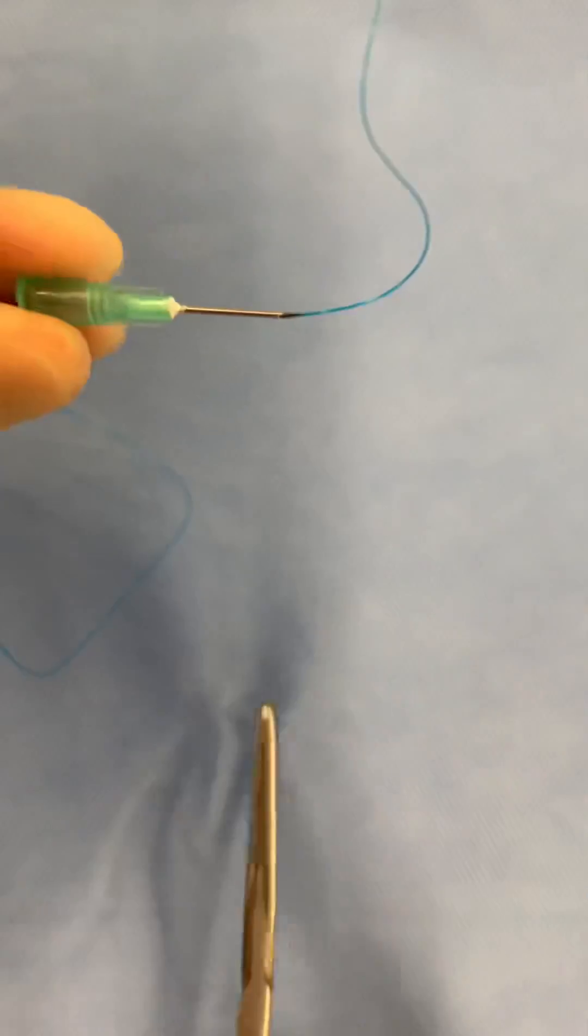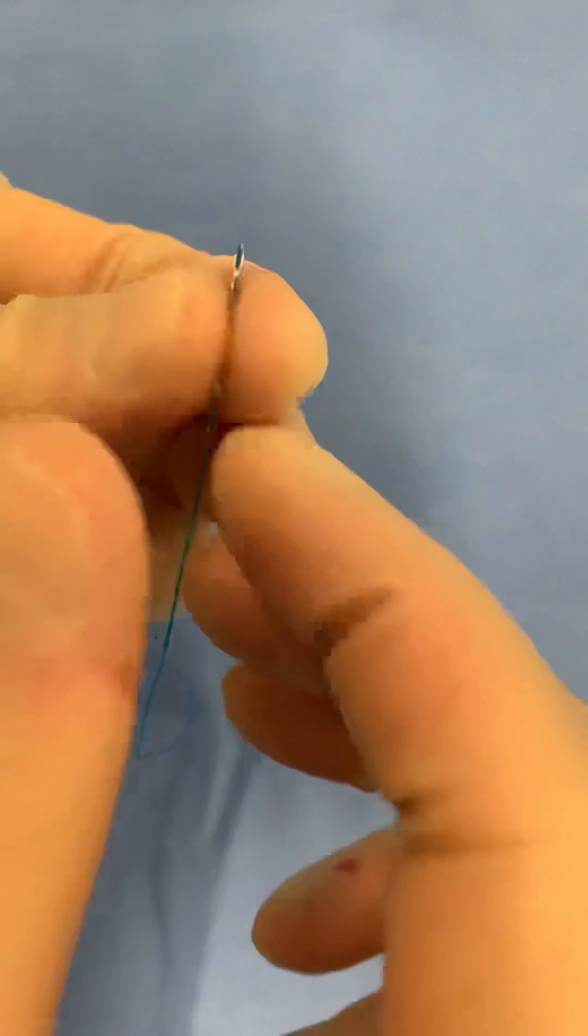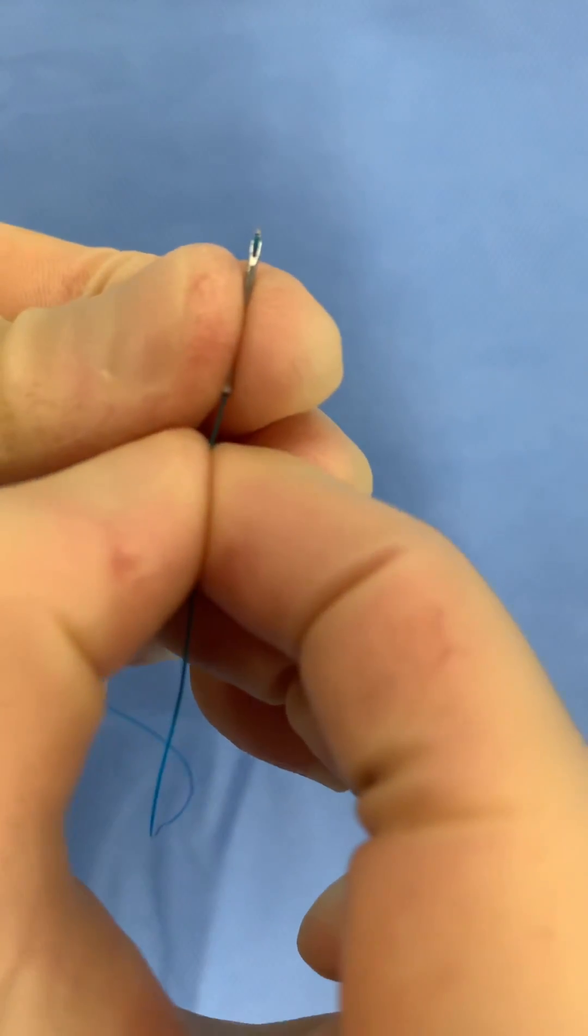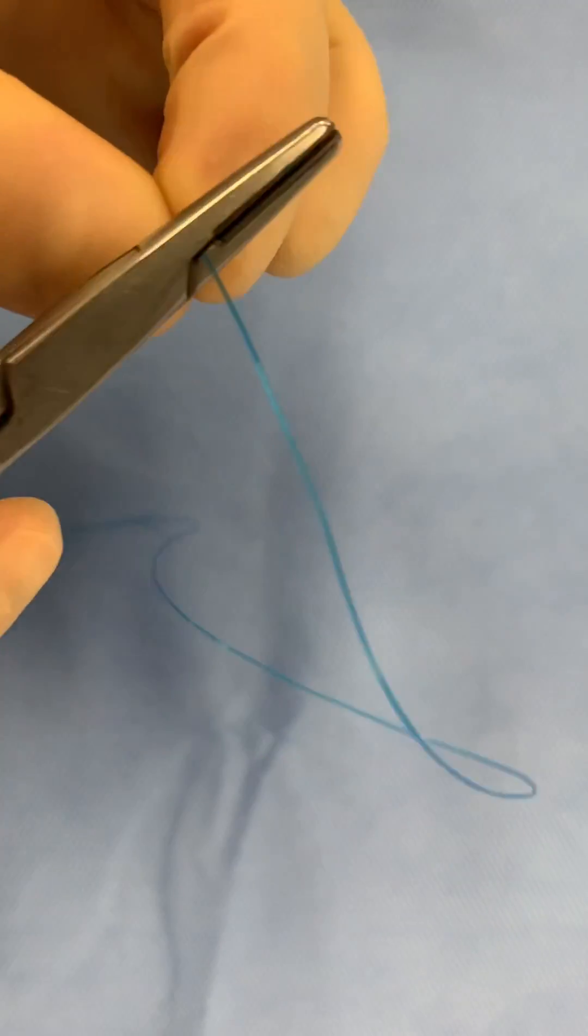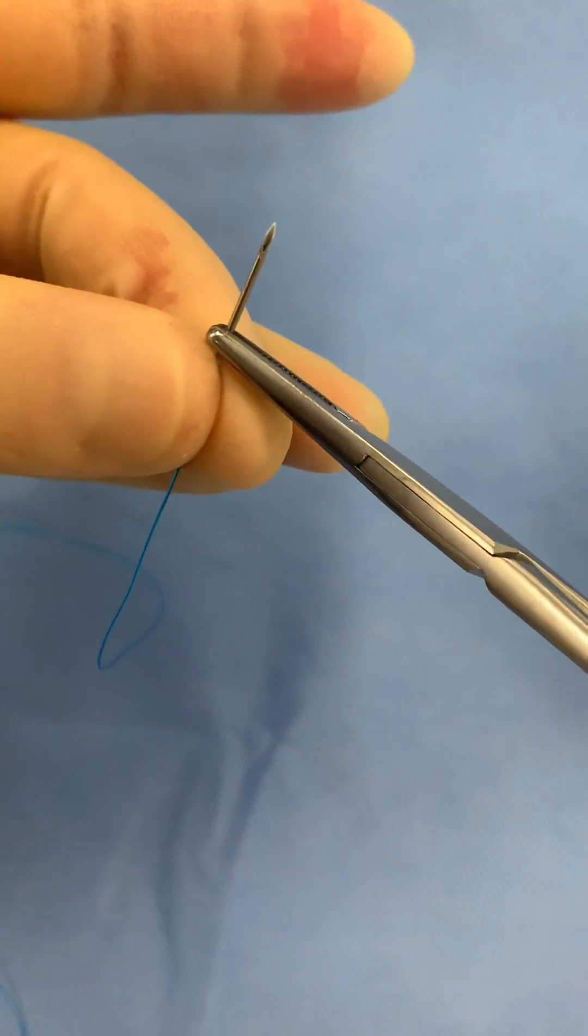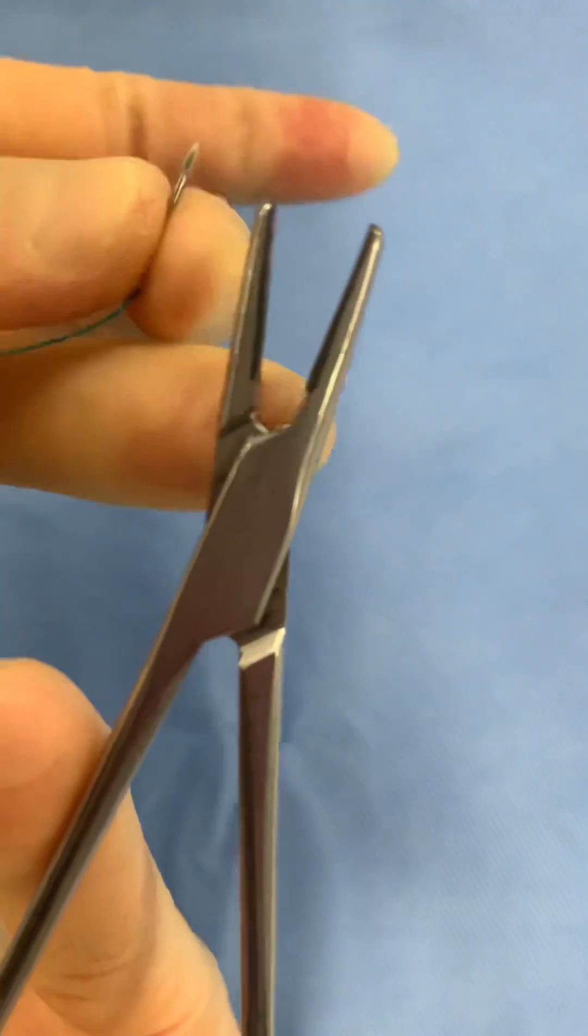Thread the hypodermic needle and break the shaft away from the hub. Pull the thread through until its end is at the dull edge of the needle. Crimp this end so it tightly holds onto the thread. If you're using a needle holder for this, use the inner edge to do the crimping.